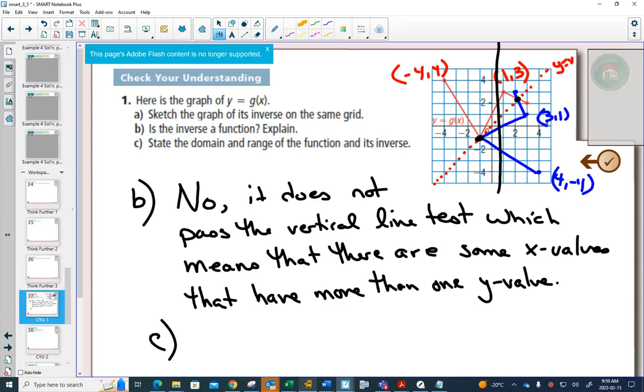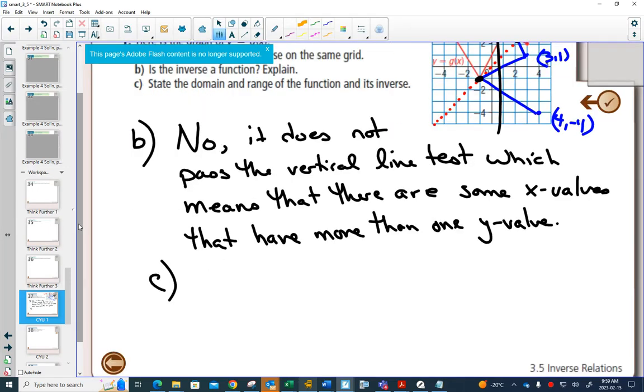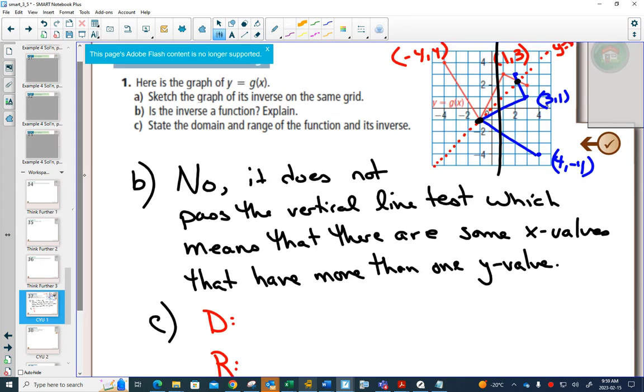state the domain and range of both. So for our red graph, we have a smallest x value in minus 4, a biggest x value in positive 3. And we have a smallest y value in minus 1 and a biggest y value in positive 4.